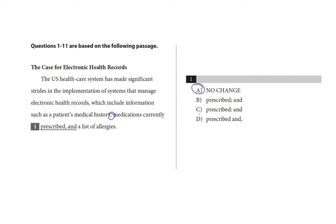Choice C uses a colon, which we know from our top tips is not used to punctuate a list — we can knock that out. To be clear, yes, you can introduce a list with a colon, but you don't use a colon as punctuation between the elements of a list. Choice D puts the comma after the 'and,' which isn't right — that's another top tip, so we can knock that out too.